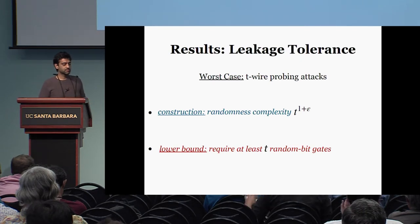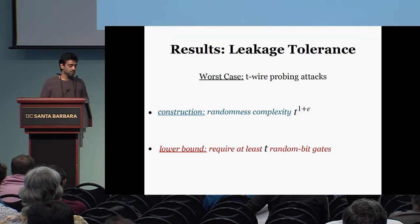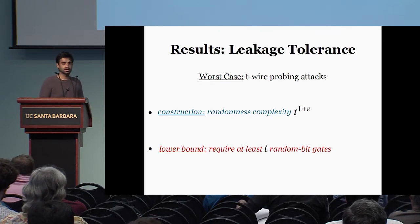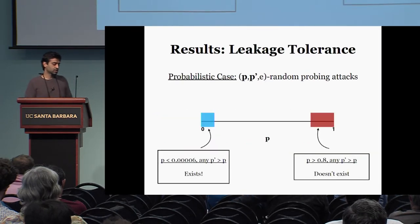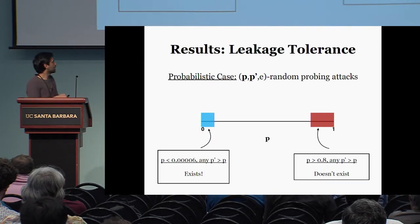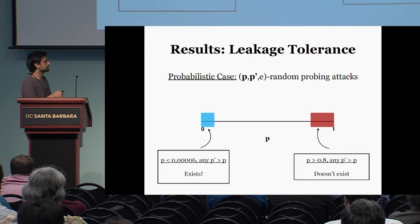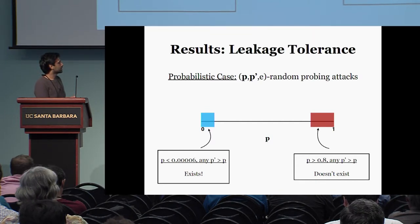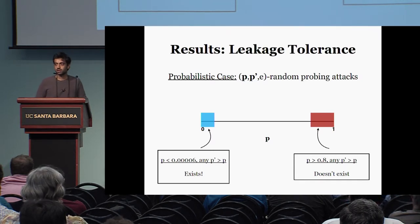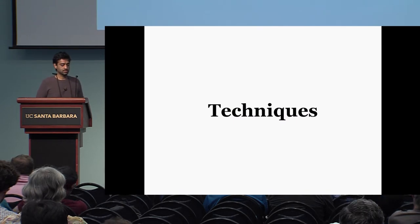We correspondingly obtain similar results as in leakage resilience. We can show a construction that has the same randomness complexity. In fact, we can also show a lower bound saying we require at least T random bit gates, so this is tight. For the probabilistic case, we can show both upper and lower bounds. There exists a leakage tolerant compiler that can tolerate any probability less than this bound, and correspondingly, if you want to tolerate probability greater than 0.8, then there does not exist any leakage tolerant compiler.